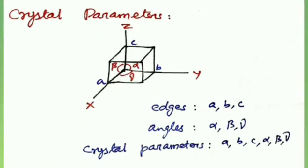The next topic is crystal parameters. The three edges of a unit cell are denoted by a, b, and c, and the angles between these edges are denoted by alpha, beta, and gamma. Alpha is the angle between b and c, beta is between a and c, and gamma is between a and b. These quantities a, b, c and alpha, beta, gamma are called crystal parameters.